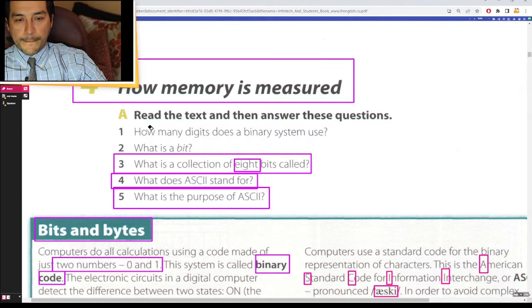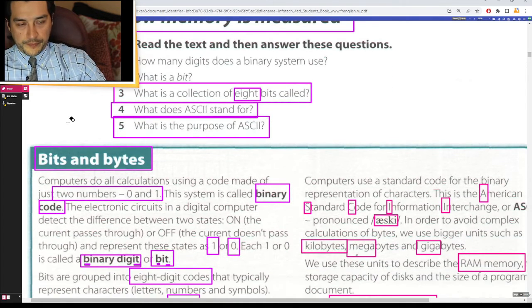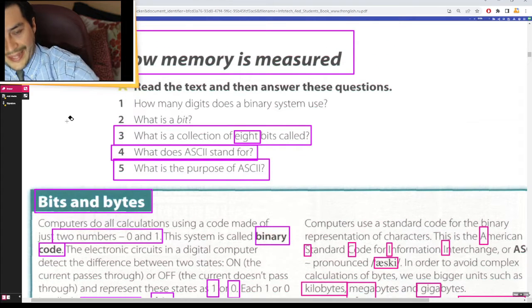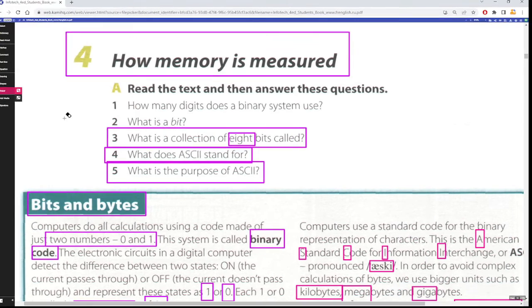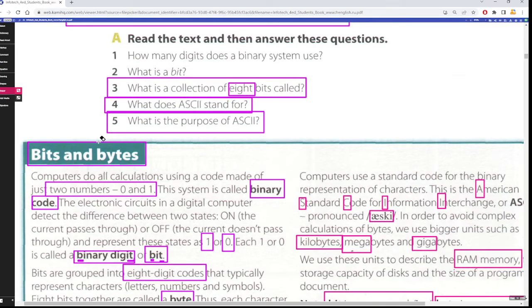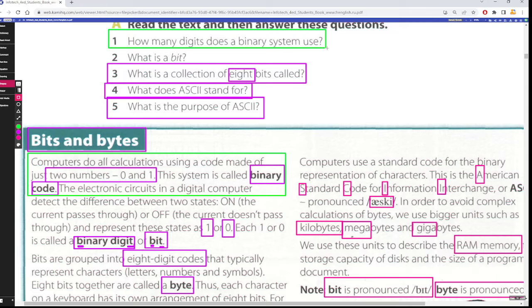Now, let's answer the questions. How many digits does a binary system use? A binary system uses two digits, one and zeros. So we got the answer right here. Two numbers, two digits.